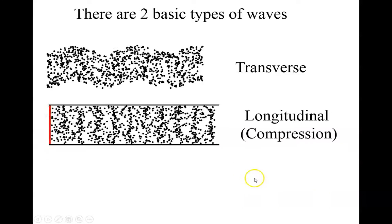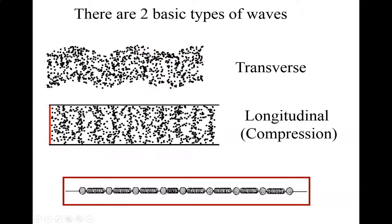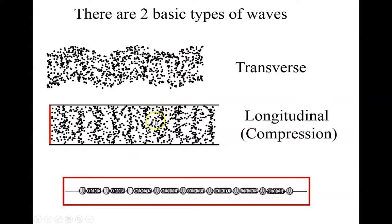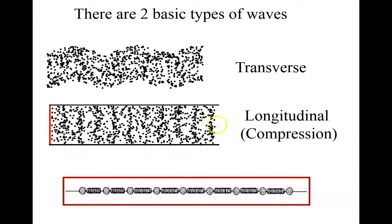There are two basic types of waves. Transverse waves: if you shake a slinky up and down, the wave pulse travels to the right while the medium oscillates up and down — perpendicular to the wave velocity. Longitudinal waves, sometimes called compression waves, show compressions traveling to the right while the medium oscillates left and right — parallel to the wave velocity.